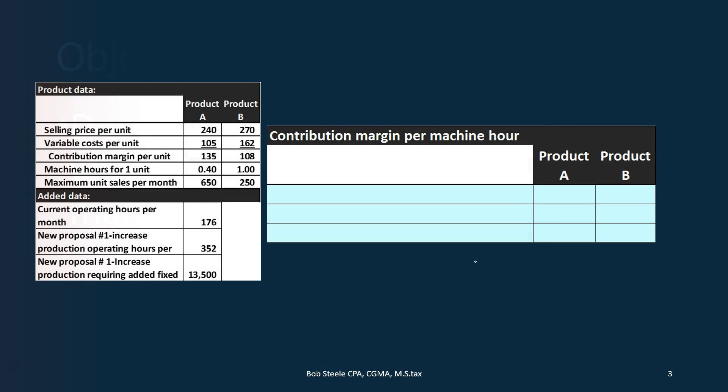We're thinking about having two products and the question is how much of those products should we produce. If we have product A and product B, how much of product A should we produce and how much of product B should we produce? We're going to have product A and product B — those are the products that we sell — with a selling price of $240 for A and $270 for B.